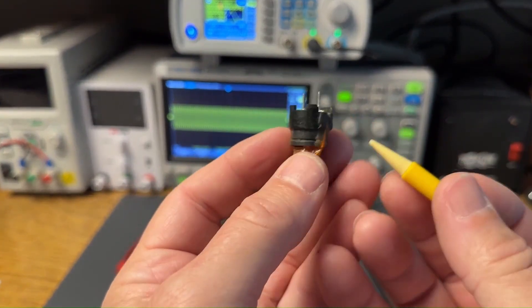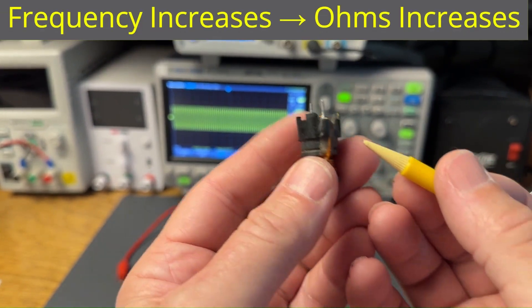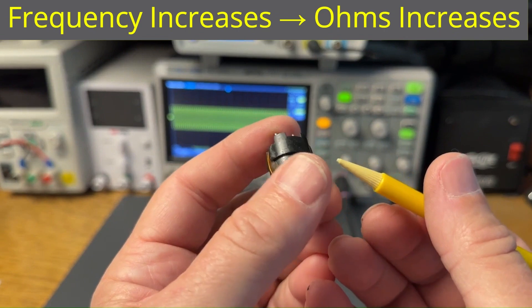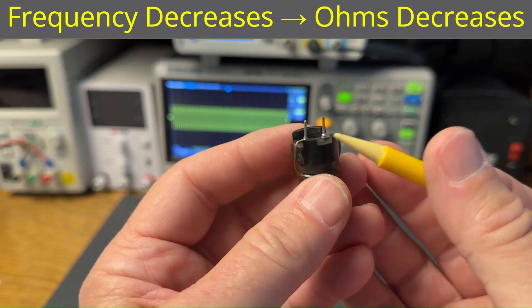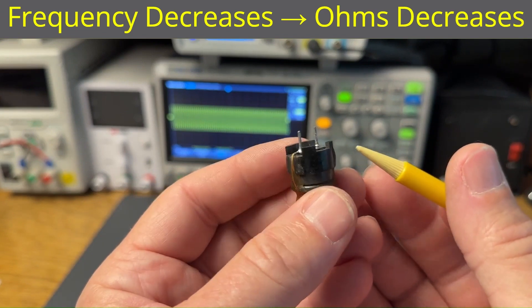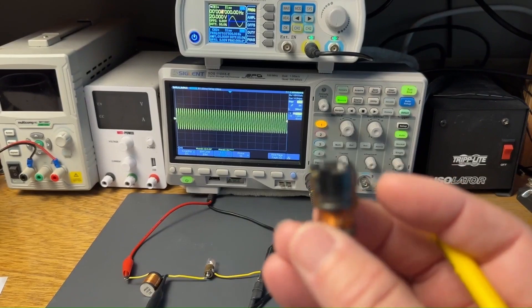Inductors tend to oppose current flow at high frequencies. In fact, at the highest frequency, the ohms of the inductor approaches infinity. As you decrease the frequency, however, the ohms correspondingly decreases. In fact, as you continue decreasing frequency, the opposition to current flow approaches zero ohms.